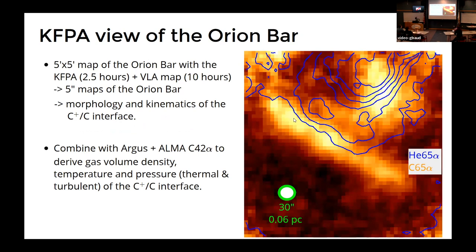And the main idea then is to combine this with the VLA to get maps of 5 arc second resolution, which would enable us to study the morphology and kinematics of the ionized gas in this region.